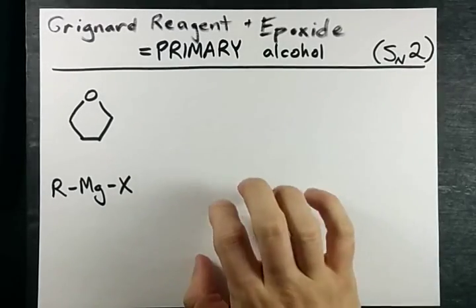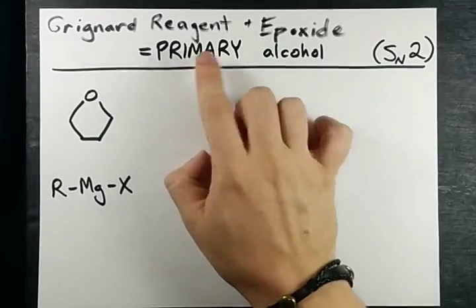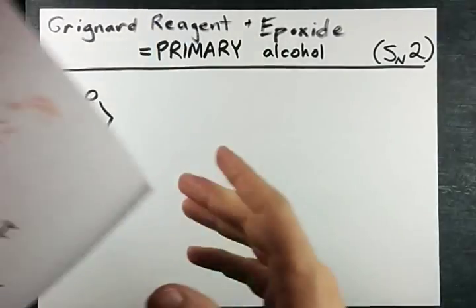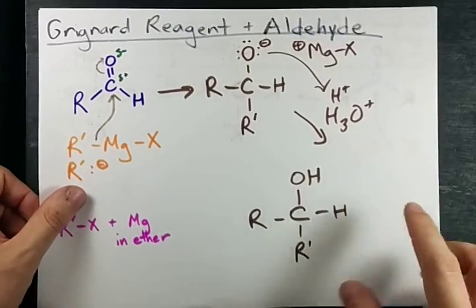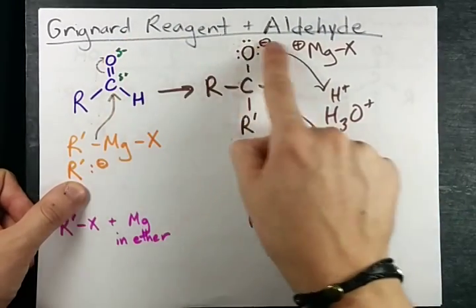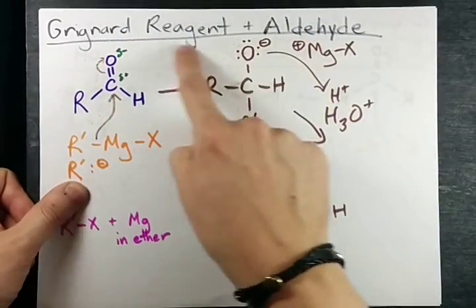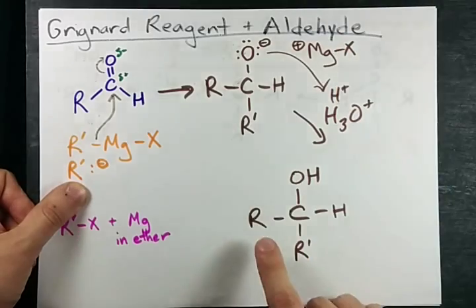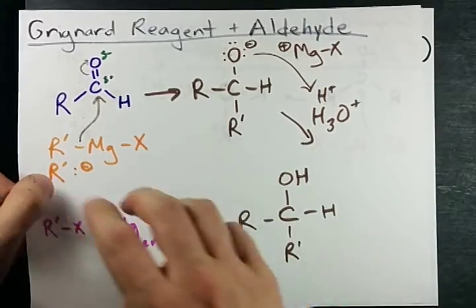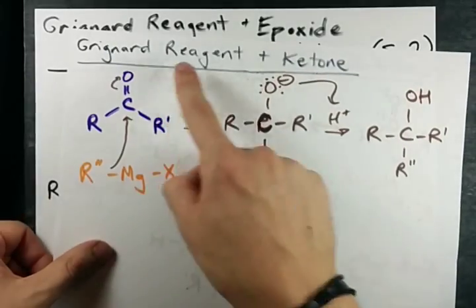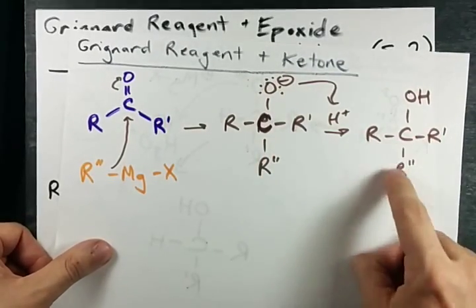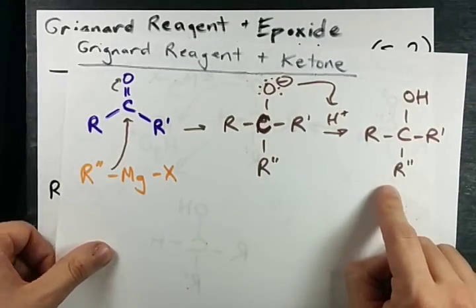Many of you have asked me how to make a primary alcohol with the Grignard reagent. You remember, or you've already watched the episode where I reacted a Grignard reagent with an aldehyde — it made a secondary alcohol. And if I react it with a ketone, I end up with a tertiary alcohol.